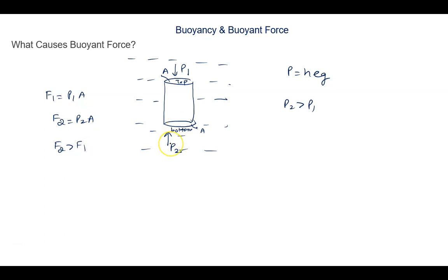When F2 is greater than F1, the object will feel an upward force. So what is the main cause of the buoyant force? There is a difference in the pressure between the bottom of the submerged object and top of the submerged object.